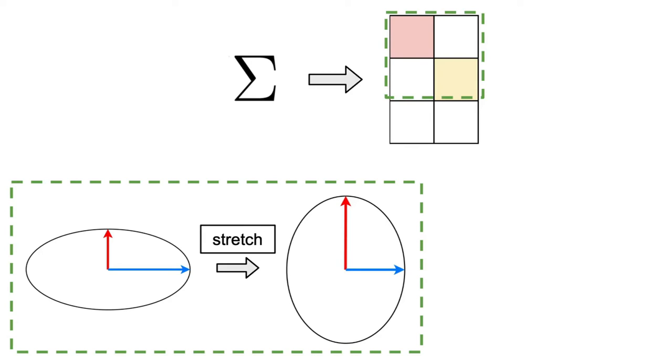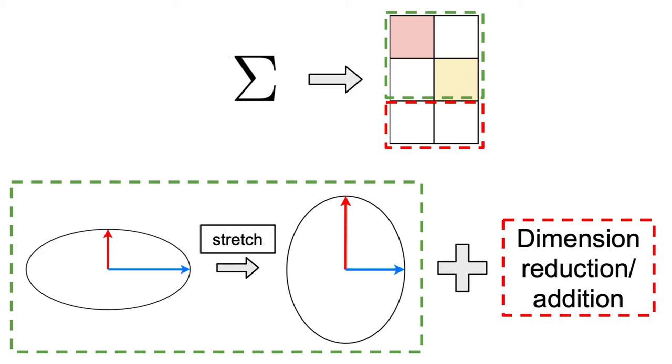Therefore, this matrix can be visualized as a stretch in the direction of singular values, but only up to a certain point, followed by a projection onto a lower or higher dimensional space, depending on whether the matrix A has more rows or columns.